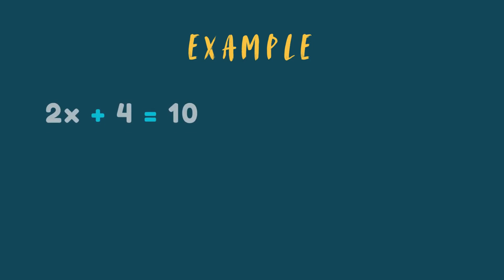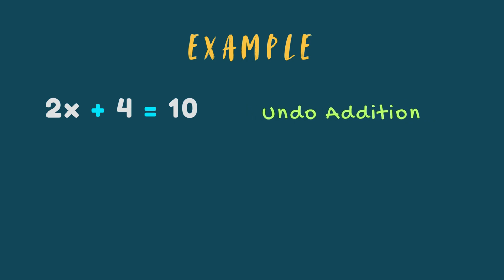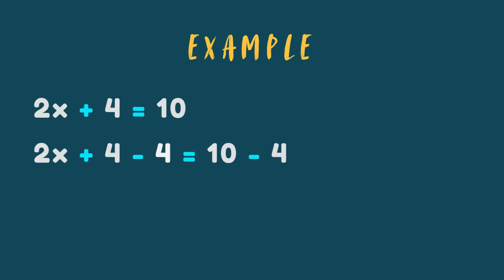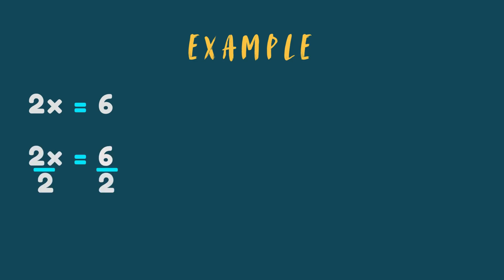Let's apply this to our example: 2x plus 4 equals 10. The unknown value x is tangled in two different operations — addition and multiplication, which is implied between the 2 and the x. To undo those two operations, we undo addition first, then multiplication. In step 1, we subtract 4 from both sides of the equation. The plus 4 and minus 4 cancel each other out, leaving 2x on the left, and 10 minus 4, which is 6, on the right. In step 2, we undo the multiplication by dividing both sides by 2. The 2s cancel out, leaving x by itself, and 6 divided by 2 gives us 3.